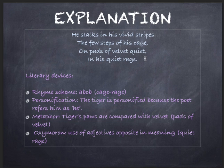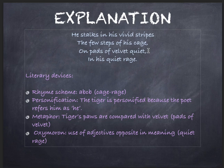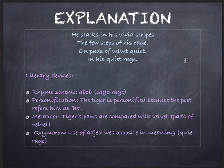The poet is telling that the tiger stalks — the tiger walks — under his vivid stripes, meaning his colorful skin, the few steps of his cage. He is able to move only a few steps because the cage is quite small. 'On pads of velvet quiet' — here, 'pads of velvet quiet' means his paws. His paws are very soft and quiet because they do not produce any sound. 'In his quiet rage' — the tiger is quiet but he is angry. Rage here means anger.